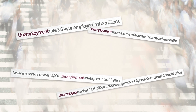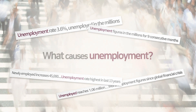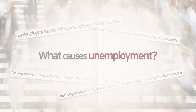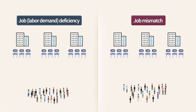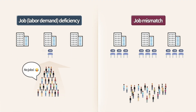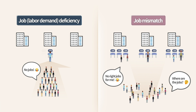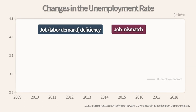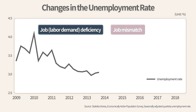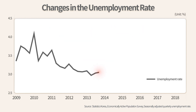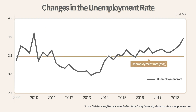Unemployment is rising, but what is causing it? Generally, unemployment occurs when there are not enough jobs, or when there are vacant jobs but they are not well connected to the unemployed — referred to as a job mismatch. Korea's job deficiency and job mismatch has worsened since 2014, with the unemployment rate on a continued increase, rising even faster in recent years.